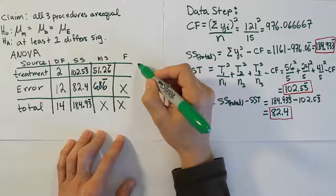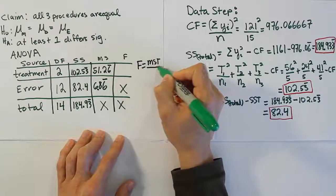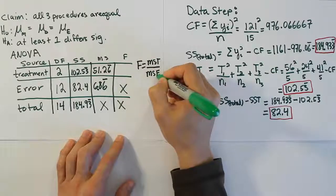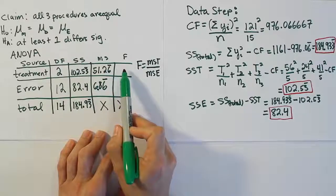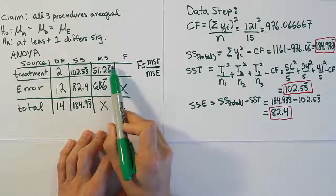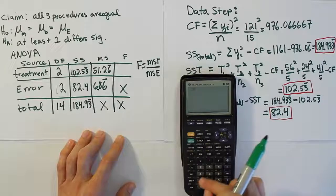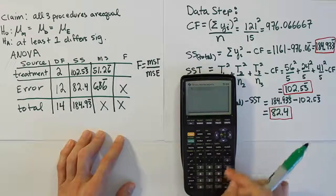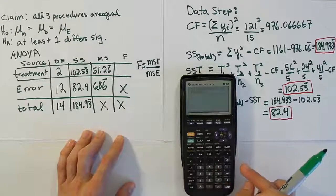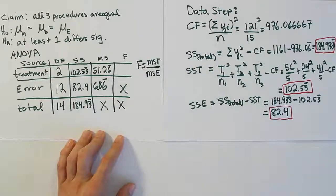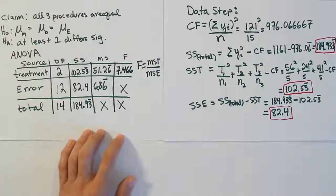Our step 4 is to compute the F test statistic, which is MST divided by MSE. So F = 51.2667 / 6.8667 = 7.466. That is our F test statistic.